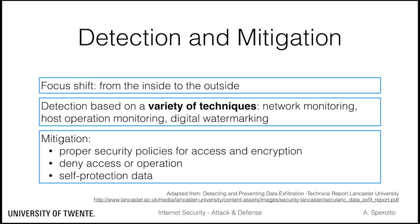With respect to mitigation, several techniques are possible. At the basis is always the need to properly define security policies about who can access what data and if and how data should be encrypted. Some systems proactively try to deny access to data or do not perform certain operations if suspicious activities are identified — for example, a mail server refusing to forward a suspicious attachment. Another example is implementing self-protecting data: an additional software layer implementing corporate security policies that ensures access to data is available only to authorized entities.